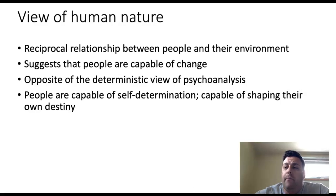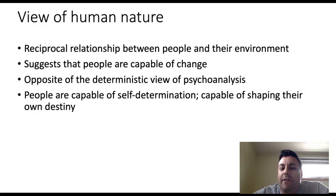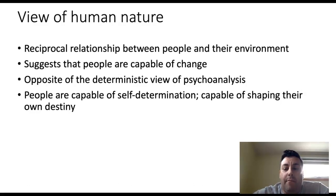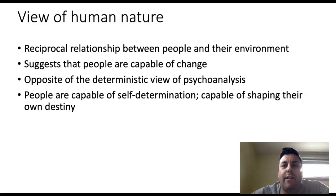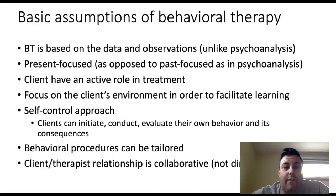Unlike Freud, who thought people were predestined to certain lots in life, the behaviorists came in and said people are capable of change. There isn't a deterministic view of human behavior and emotion — people are capable of self-determination. Part of the reason is that there's a reciprocal relationship between people and their environment: our environment shapes us, but people can also shape their environment, and by doing so they can change the way their environment shapes them. What the behavioral people were really saying is that people have more power than Freud thought they did, and that set the stage for many other therapeutic modalities we'll discuss this semester.